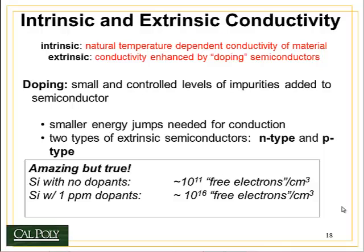There's another type of semiconductor behavior called extrinsic. By extrinsic, what we're doing is we dope the semiconductor with impurity elements. Doping is the word we use when we put impurity elements in a semiconductor. Alloying is the word we use when we talk about putting impurity elements in a metal. The advantage of doping is you get smaller energy jumps needed for conduction — in other words, you shrink the size of the band gap. There are two types of extrinsic semiconductors: n-type and p-type.